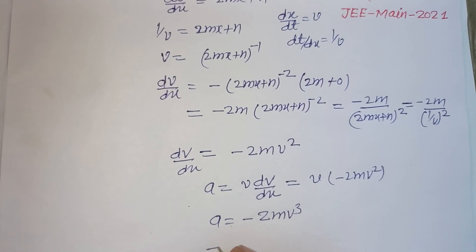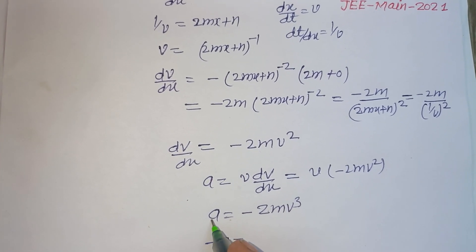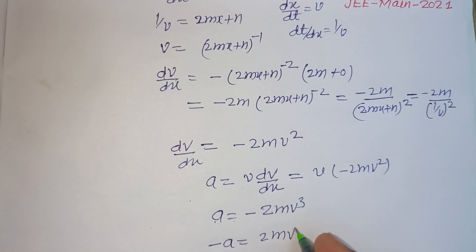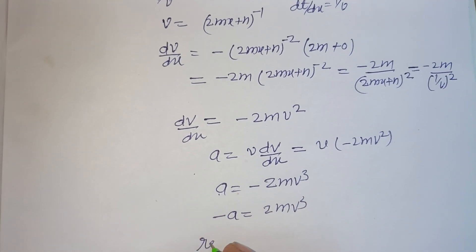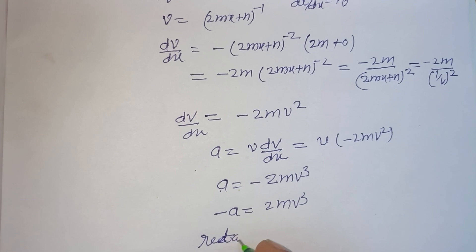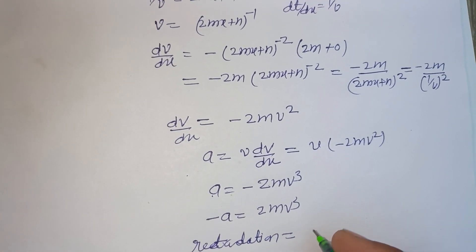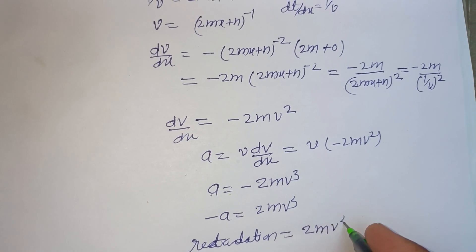We take here negative sign, so minus a equals 2m v cubed. And this is what? This is retardation. Retardation, the negative sign of acceleration, is called retardation.